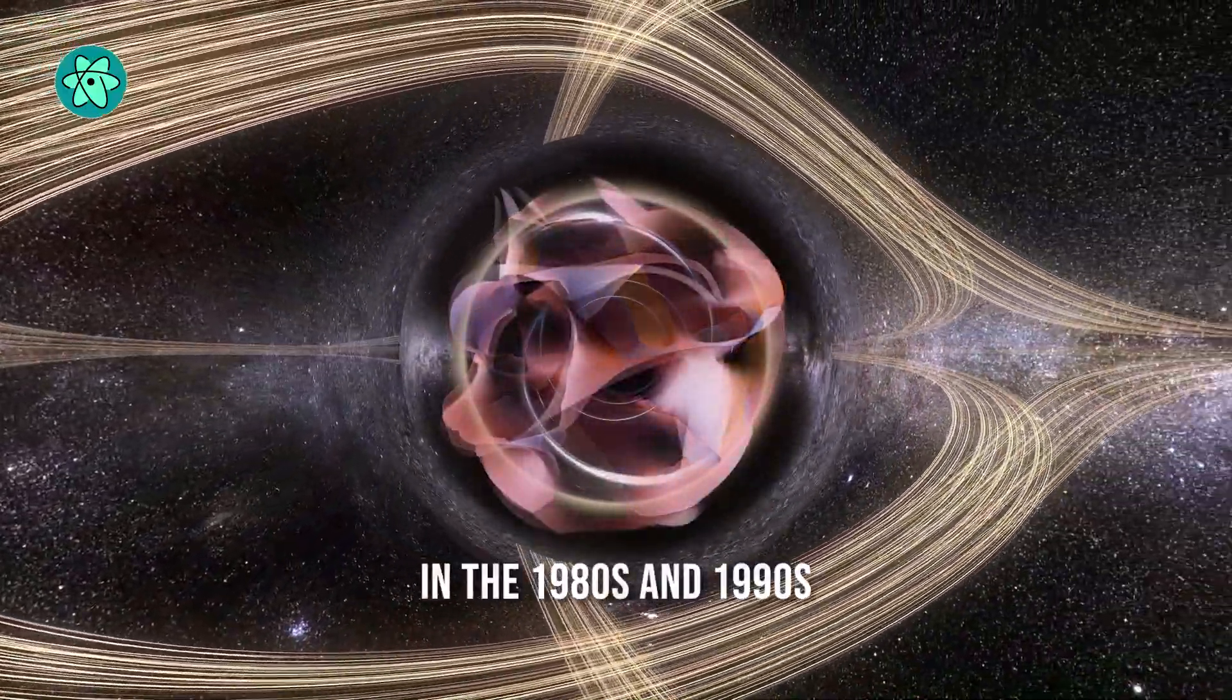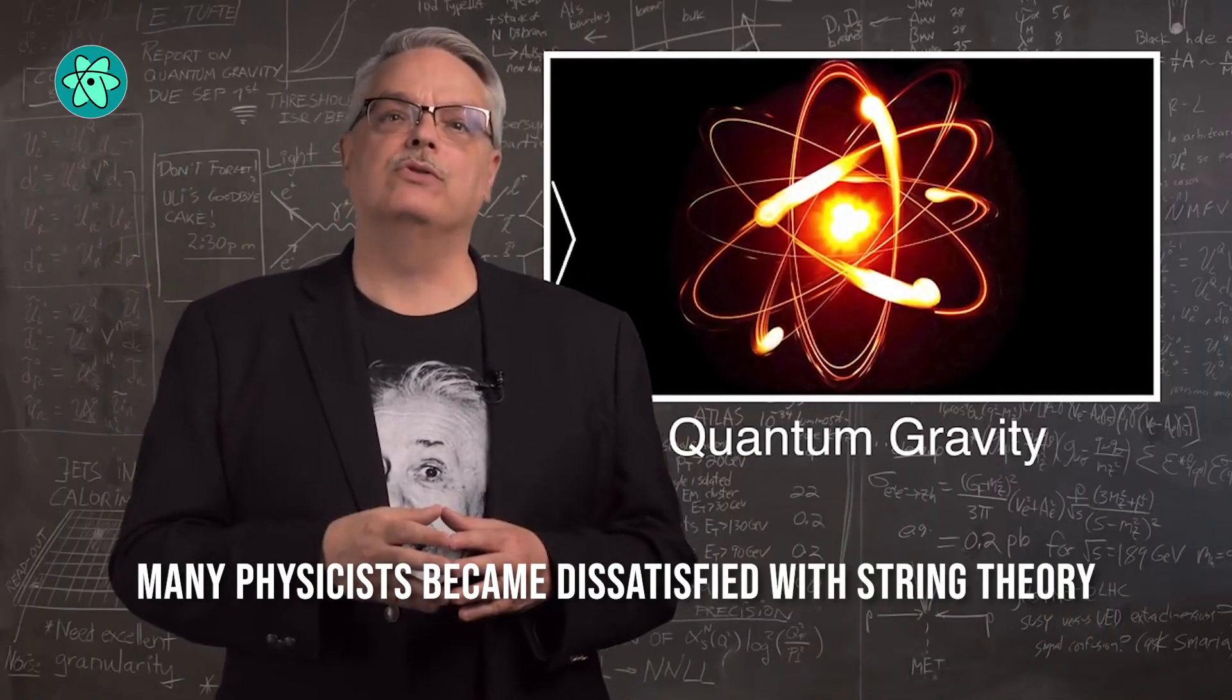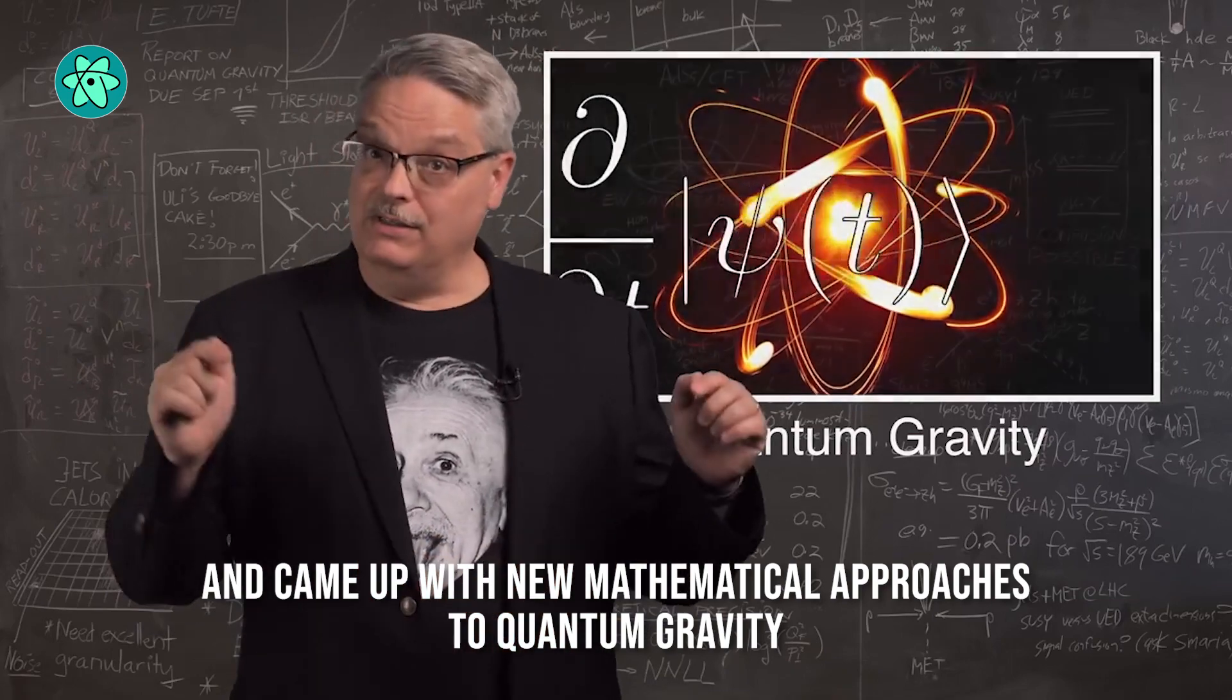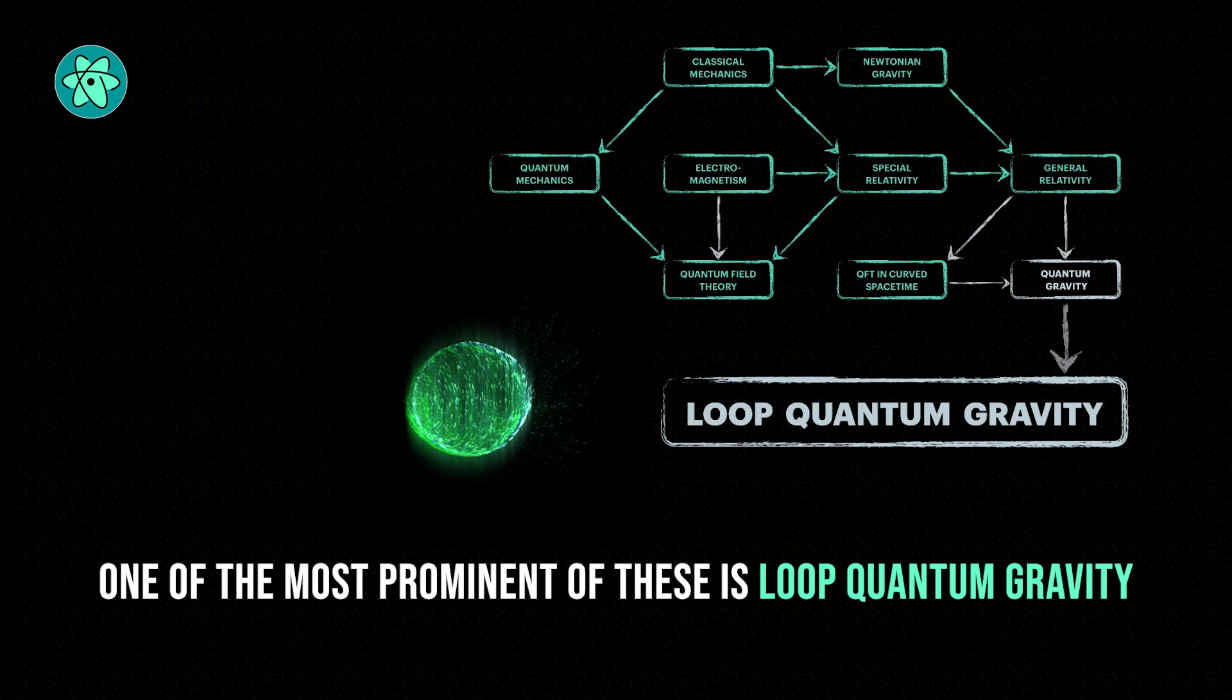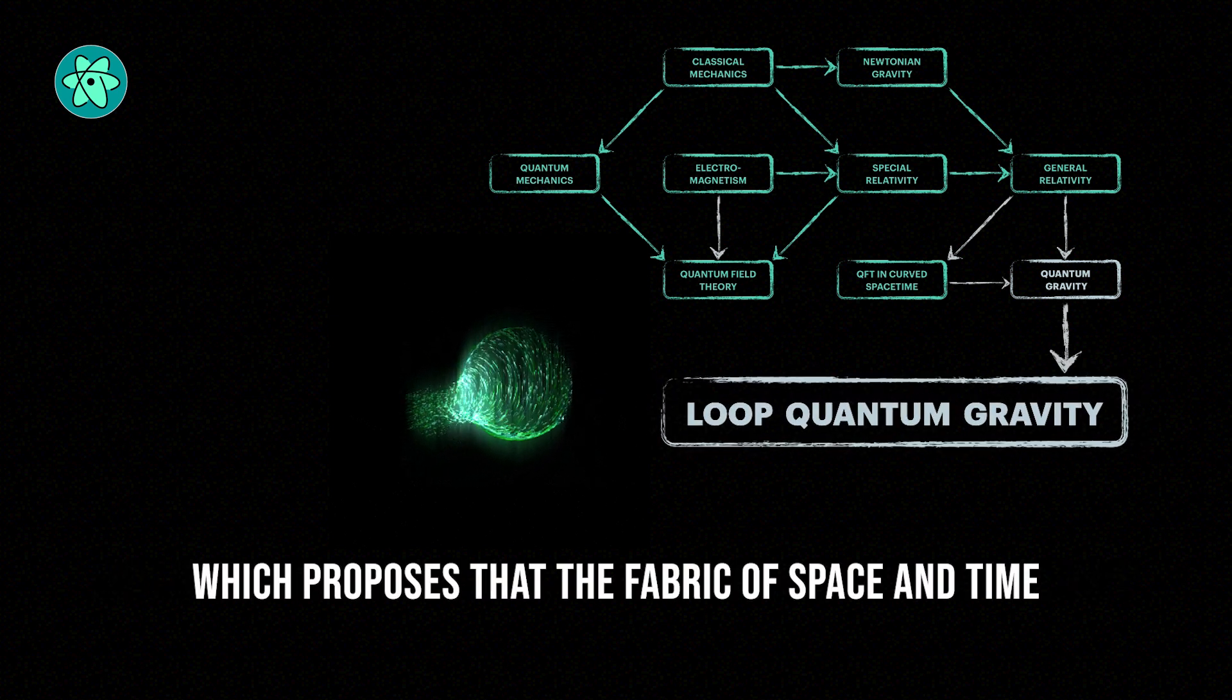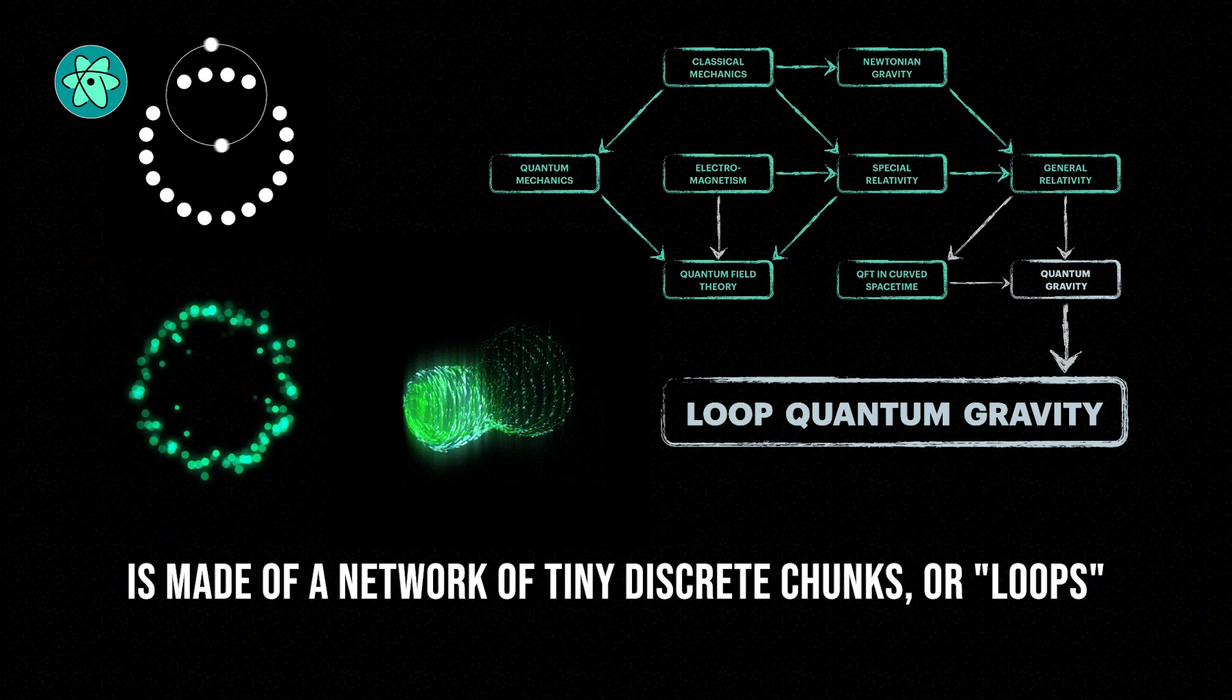In the 1980s and 90s, many physicists became dissatisfied with string theory and came up with new mathematical approaches to quantum gravity. One of the most prominent of these is loop quantum gravity, which proposes that the fabric of space and time is made of a network of tiny discrete chunks, or loops.